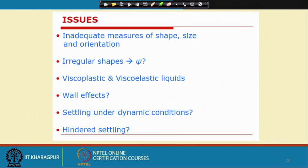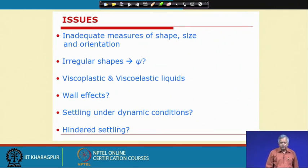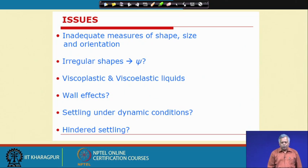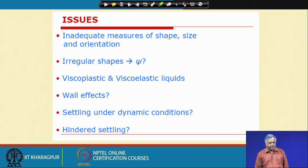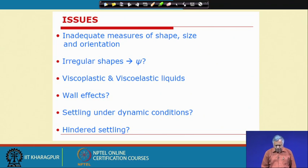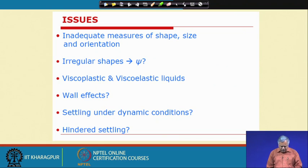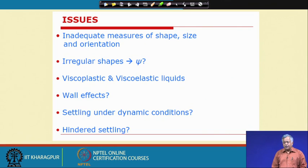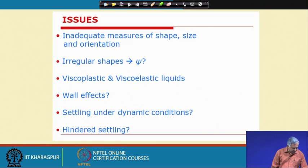Outstanding issues in this field include inadequate measures of particle shape, size, and orientation — for irregular shapes it is unclear whether sphericity is the appropriate criterion. Viscoplastic and viscoelastic liquids also present different challenges, as do wall effects and settling under dynamic conditions where the fluid itself is moving, leading back to hindered settling conditions.